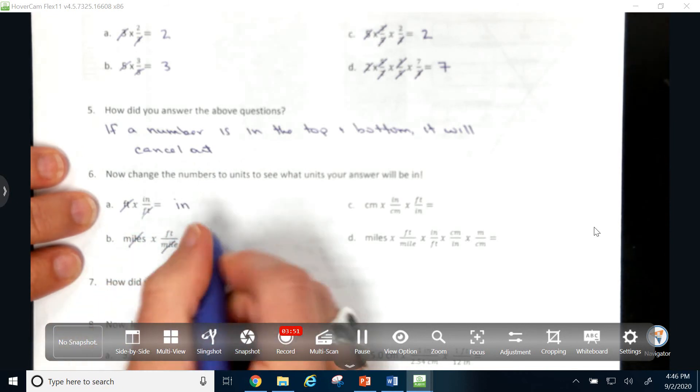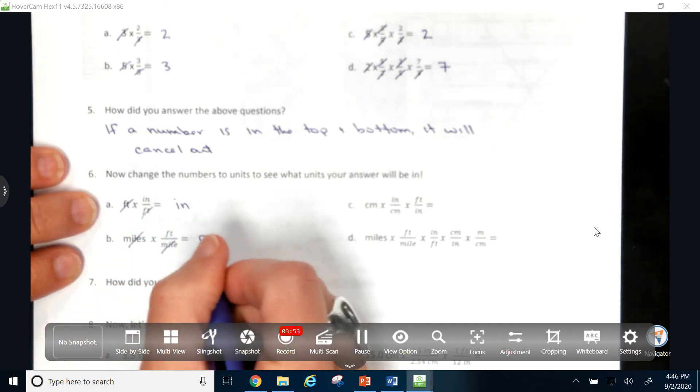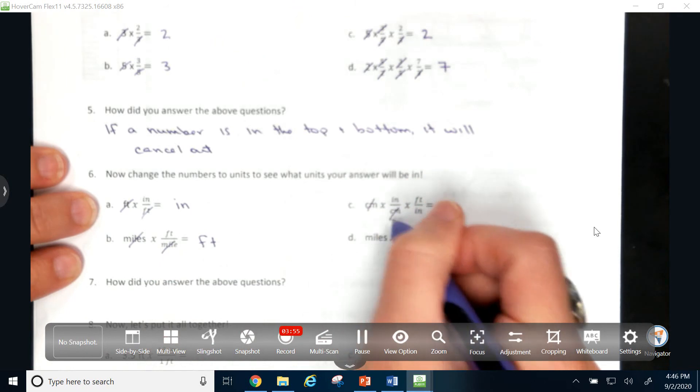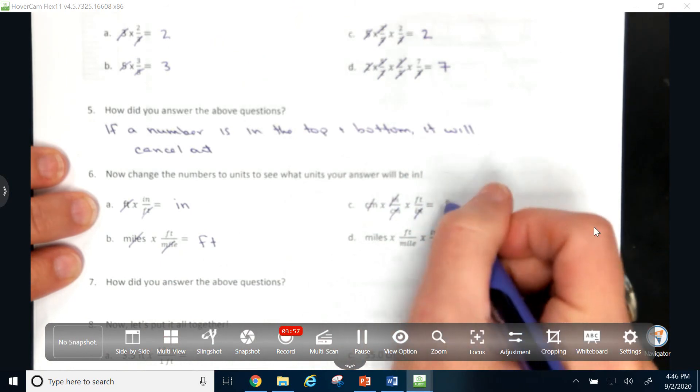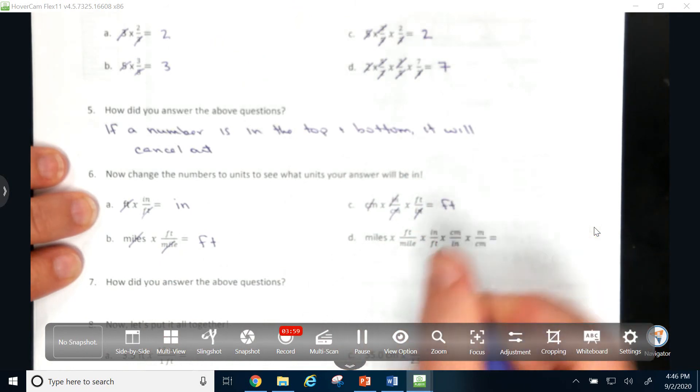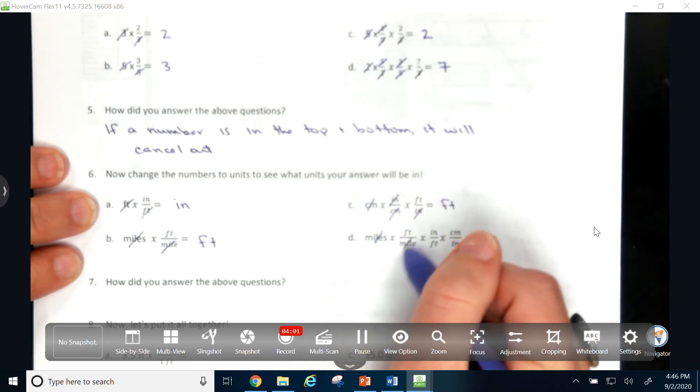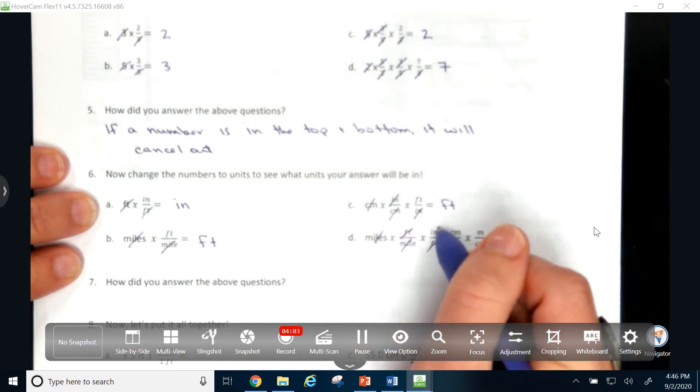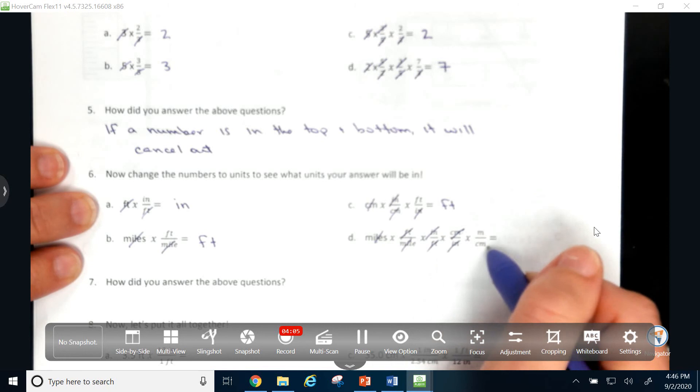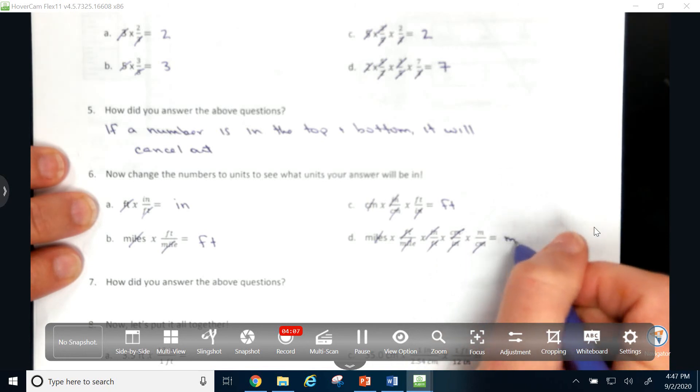Here, my miles would cancel out, and my answer would be in feet. Here, my centimeters would cancel, and my inches would cancel, so I'm left with feet. And here, my miles would cancel, my feet would cancel, my inches would cancel, my centimeters would cancel, and I'm left with meters.